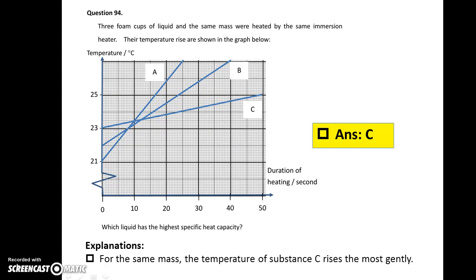Question 94. From the temperature graph, can you tell which liquid has the highest specific heat capacity? Since the mass of liquids are the same, the one with the highest specific heat capacity means it has to absorb the largest amount of energy in order to increase the temperature by a single degree Celsius. So it takes more time for the temperature to increase. So the answer is C.